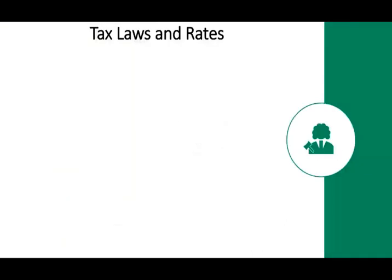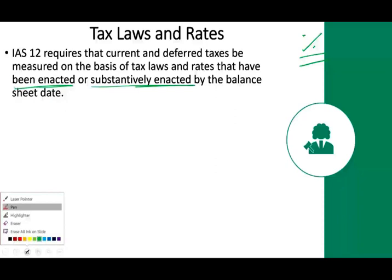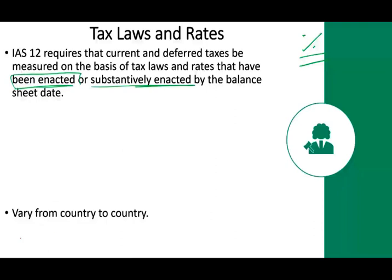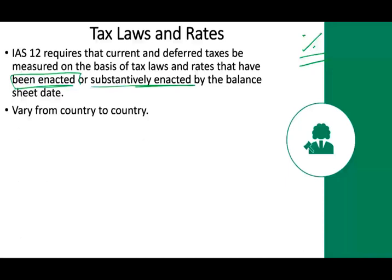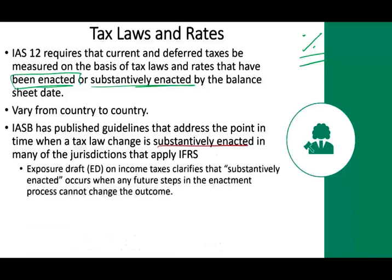The next question is which tax rate to use when computing deferred tax assets and deferred tax liabilities. IAS-12 requires that current and deferred taxes must be measured on the basis of the tax law that has been enacted or substantially enacted — pretty much the same language as US GAAP. We need to understand how enacted is defined. It varies from country to country, but the IASB has published guidelines: a tax change is substantially enacted when you cannot change the outcome — when the legislative power takes action and passes the law.